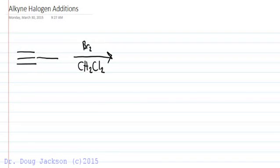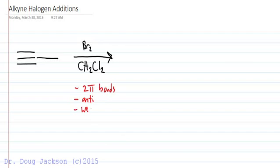Let's take a moment to review halogen additions to alkynes. With alkynes versus alkenes, we have two pi bonds to work with — so double the reactivity. We know that halogens add in an anti fashion, and we can stop at one addition or keep going.